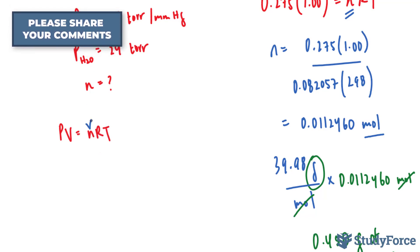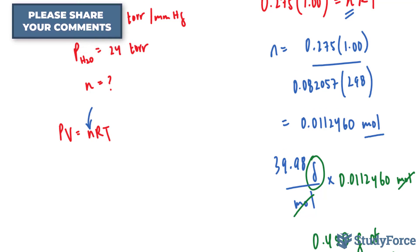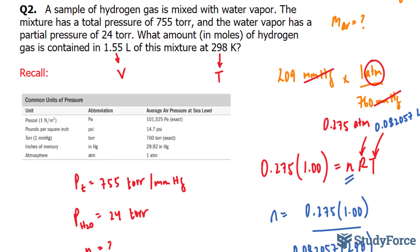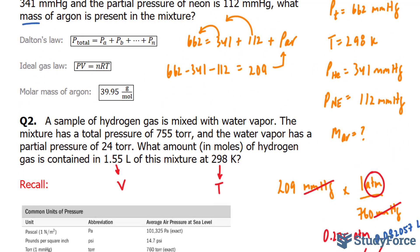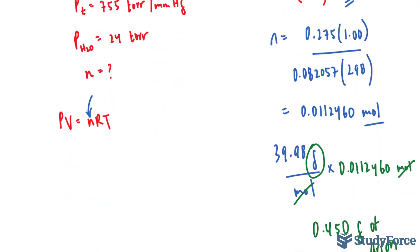And this is what we're looking for. To get the pressure of hydrogen gas, we have to use Dalton's law, which states that the sum of all the partial pressures is equal to the total pressure.